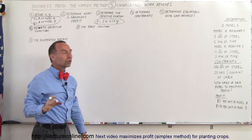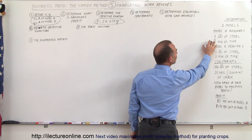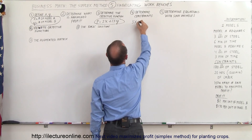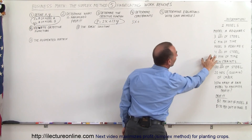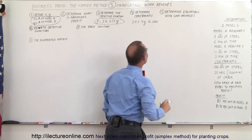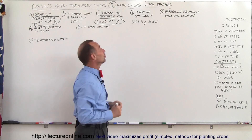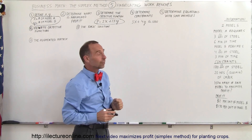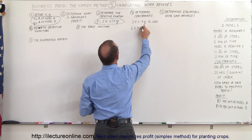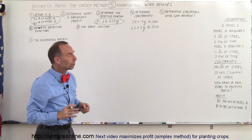Now, what are the constraints? We have only a thousand pounds of steel, and we need three pounds for each unit of A and four pounds for each unit of B. That means 3x plus 4y must be less than or equal to 1,000, because that's all the steel we have each day. Three is the number of pounds for each unit of x, and four is the number of pounds for each unit of y.